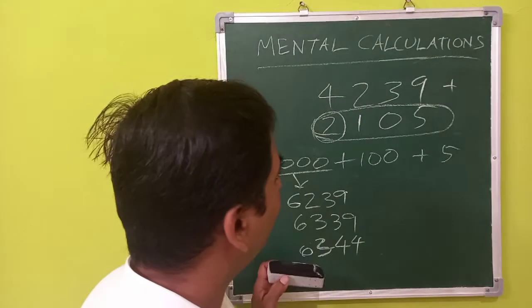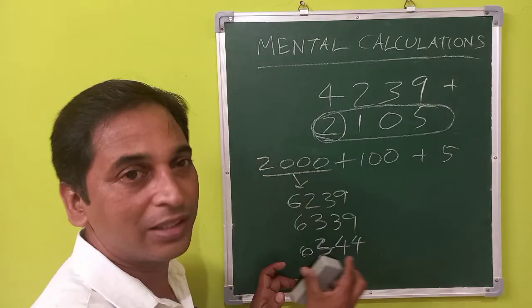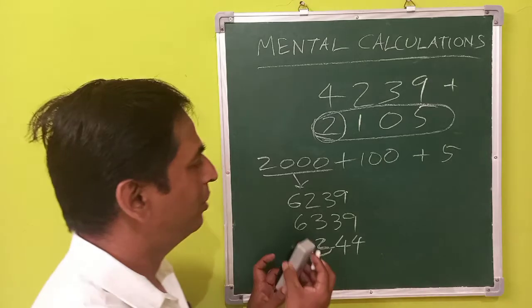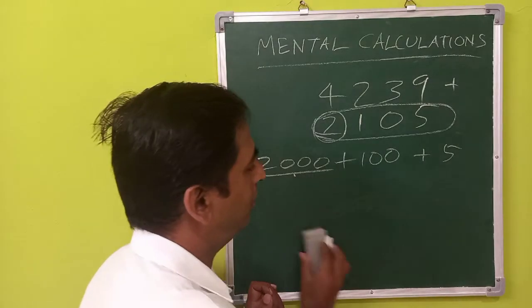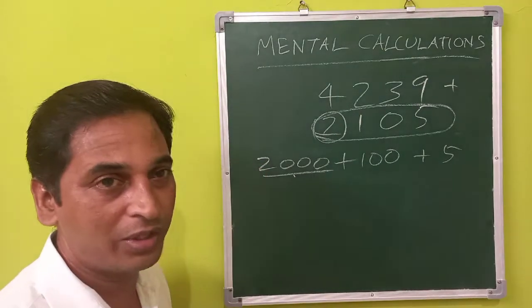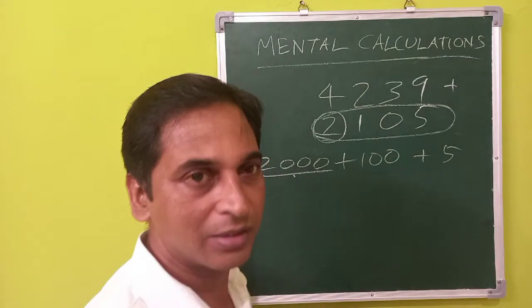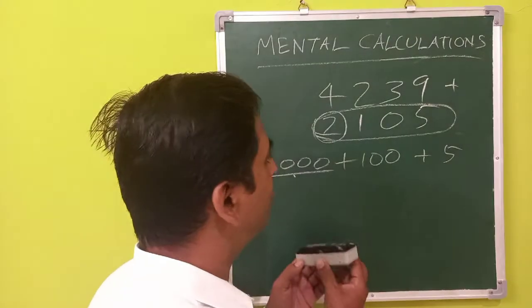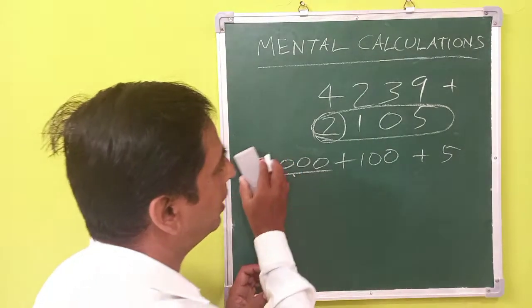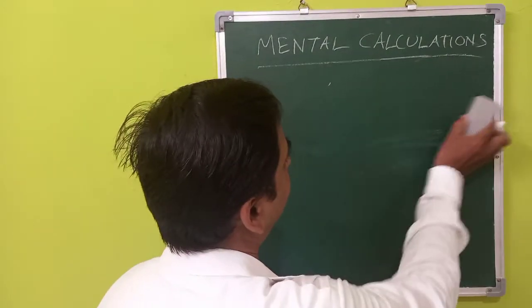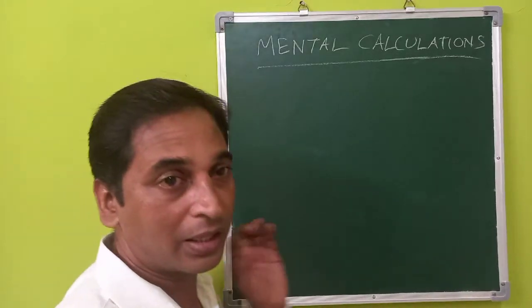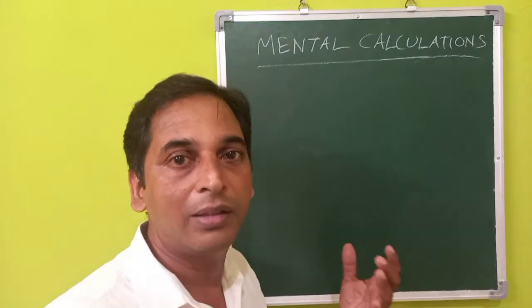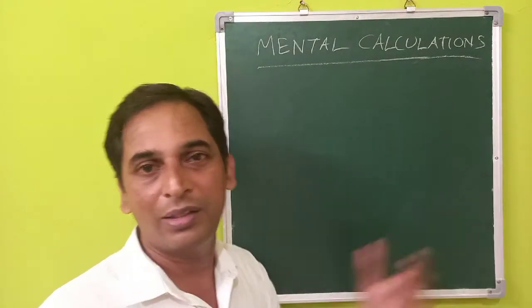So here we are doing the addition from left to right. In the beginning it may seem to be quite difficult, but with practice it becomes very easy. So do practice by taking some numbers like this and practice it by using the left to right addition method.